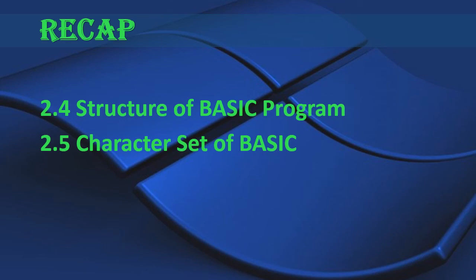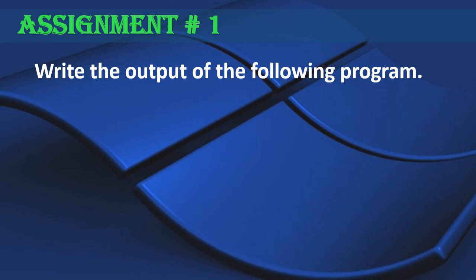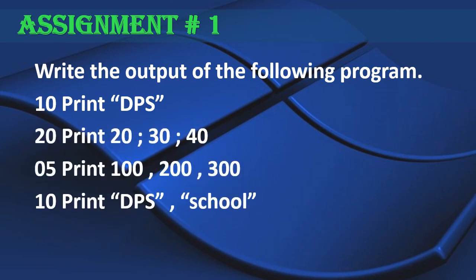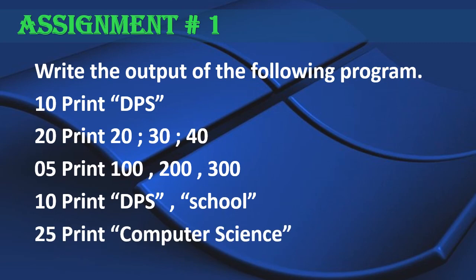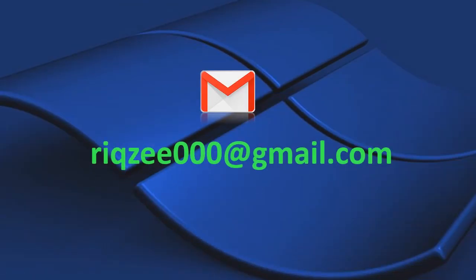So here we have learned the structure of a BASIC program and the long list of the character set of BASIC. I hope you have understood these. Here is the first assignment from unit two: write the output of the following program. Guess the output first, write it on paper, then type and execute the program in PC BASIC, which I hope you have downloaded. If you have not installed it yet, get the download link from the description of this video. I'll be waiting for your assignments at Wixie000 at gmail.com until the next lecture. Take care and Allah Hafiz.